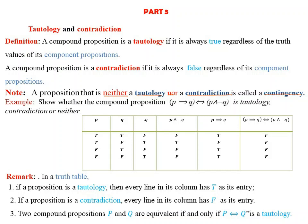A compound proposition that is neither a tautology nor a contradiction is a contingency. For example, show whether the compound proposition p implies q if and only if p and negation q is a tautology, contradiction, or neither. We will construct a truth table for the compound proposition.